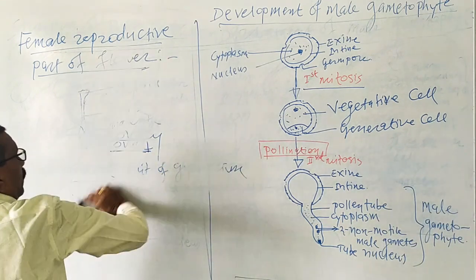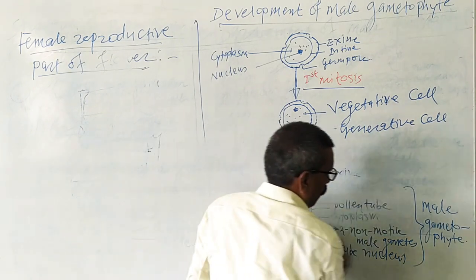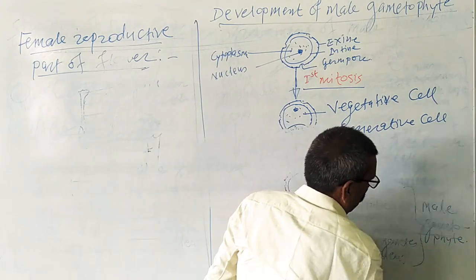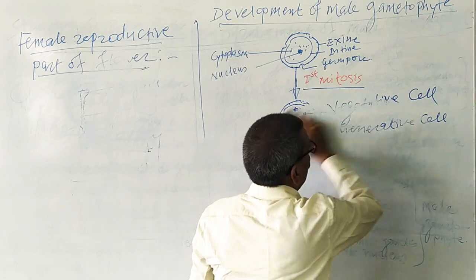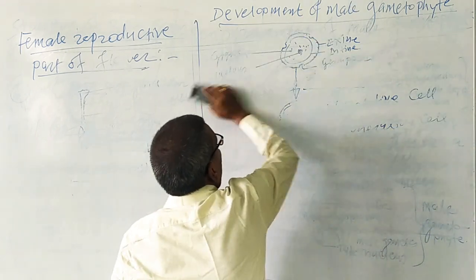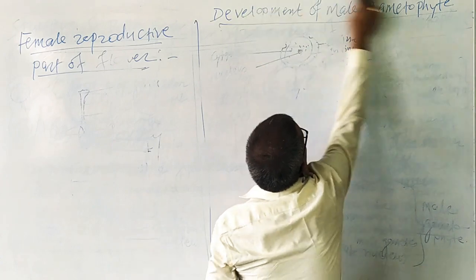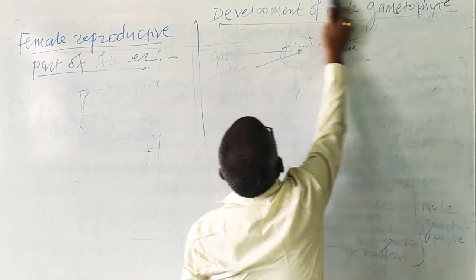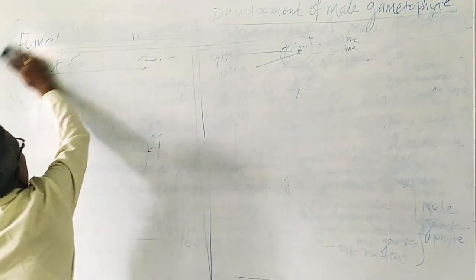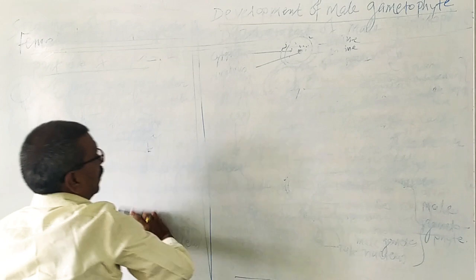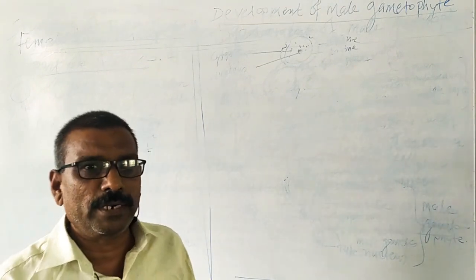Next we are going to study the structure of the ovule. The ovule is produced inside the ovary from the placenta of the ovary. In angiospermic plants, the ovule is generally an inverted ovule.